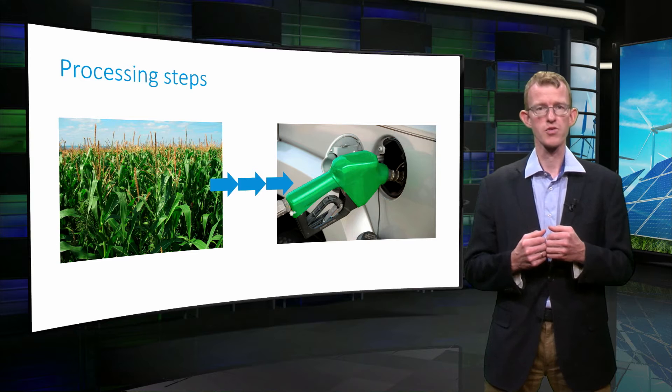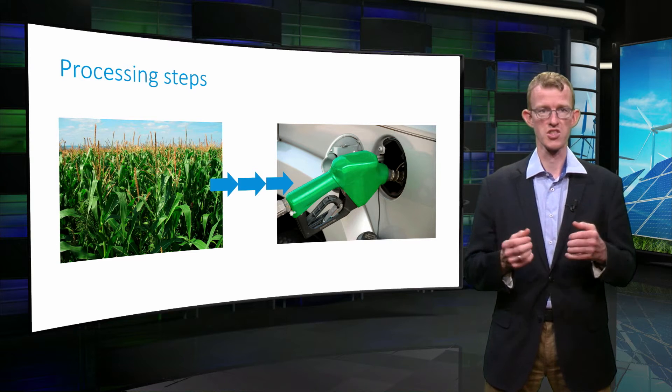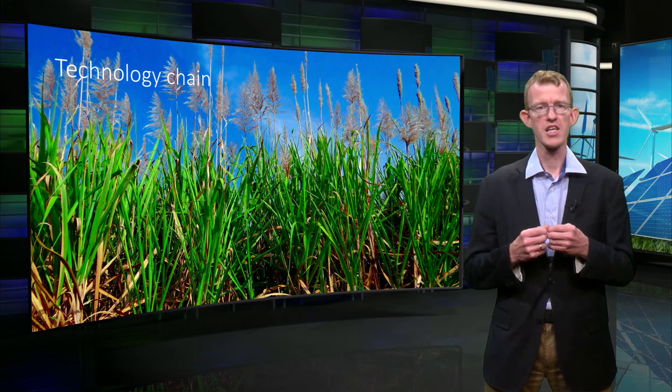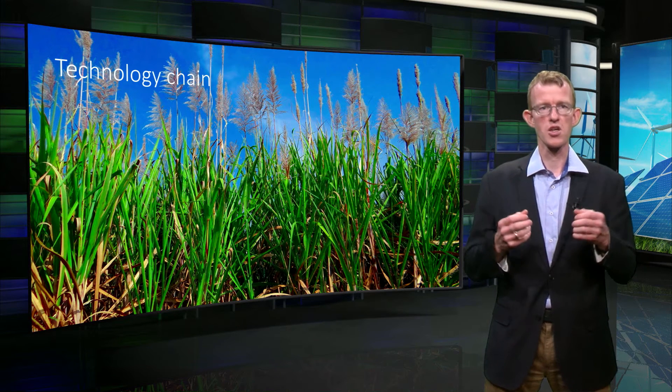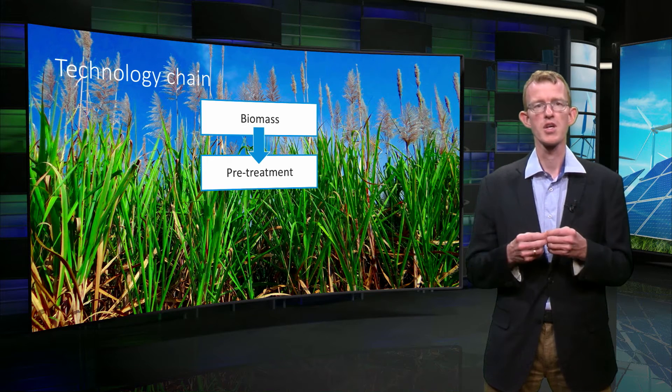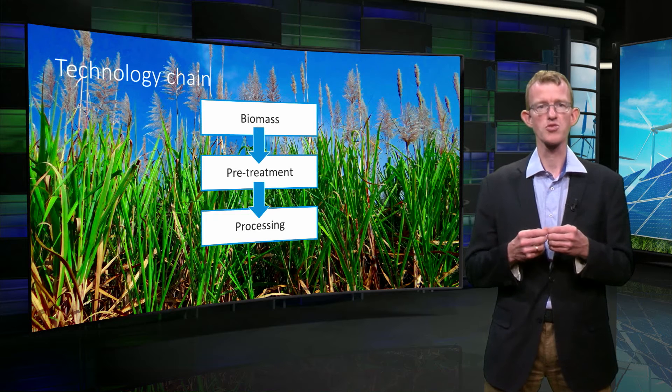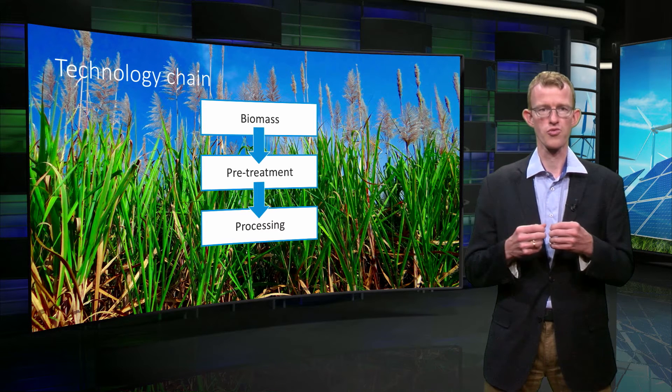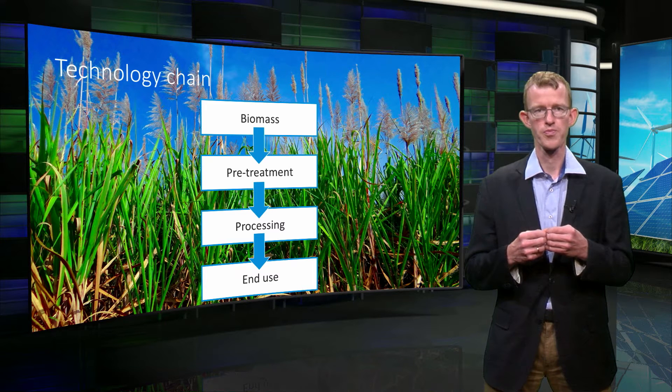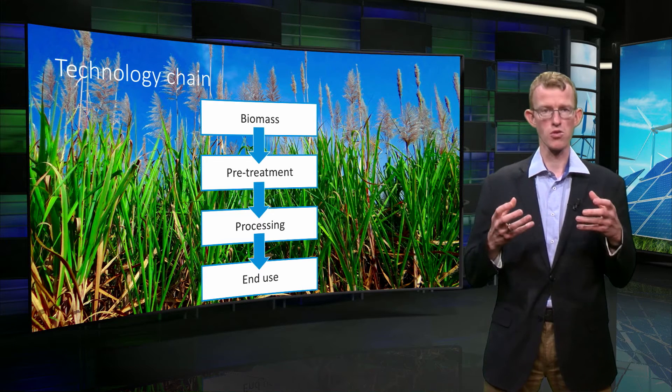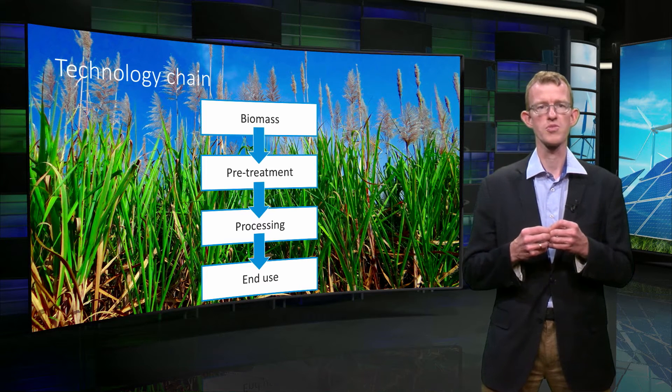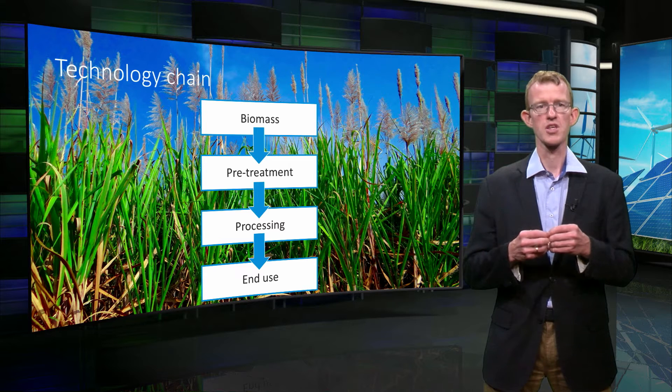In this lecture I will tell you briefly about a number of common processing steps. The typical technology chain starts with a biomass resource, first we do some pre-processing or pre-treatment, that's followed by the actual processing which finally gives us a certain form of energy for end-use: heat, power, or fuel. We will use this basic technology chain to give an overview of the different types of resources, pre-treatment, processing steps, and end-use steps.